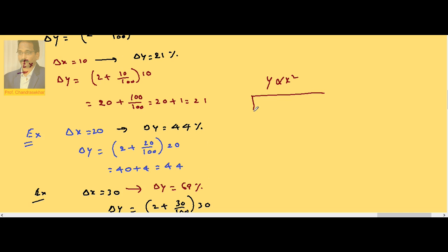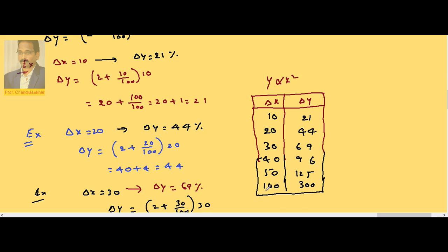So you can tabulate: delta x is the percentage change in x and delta y is the percentage change in y. If x changes by 10 percent, y changes by 21; 20 is 44, 30 is 69, 40 is 96, 50 is 125, 100 is 300. It is standard data: whenever x changes by 10 percent, y changes by 21; 20 is 44, 30 is 69, 40 is 96, 50 is 125, 100 is 300.